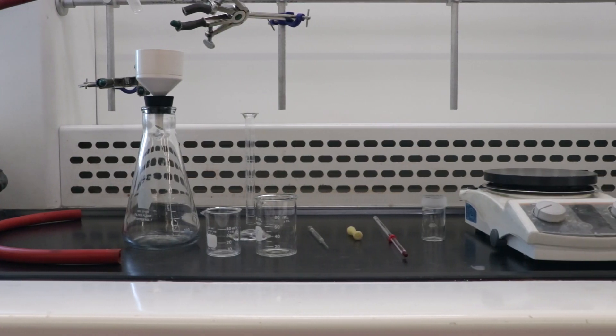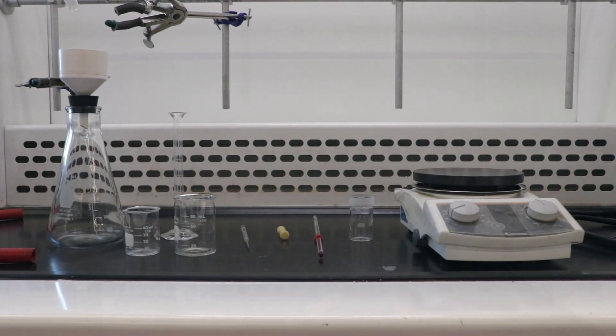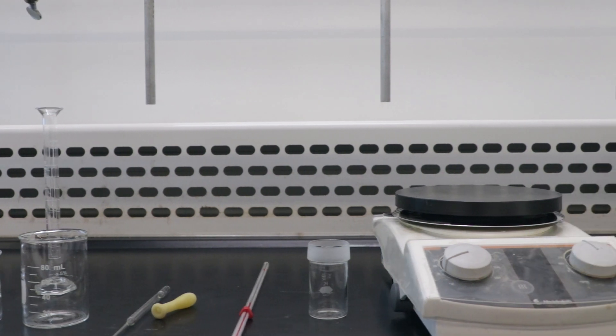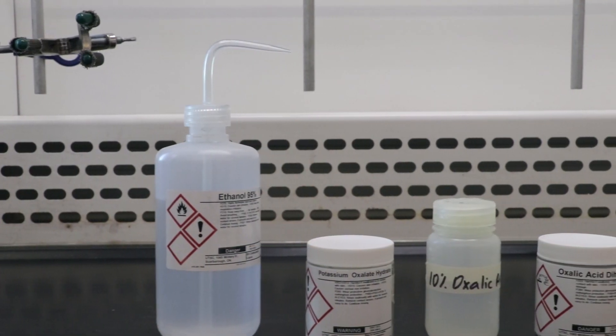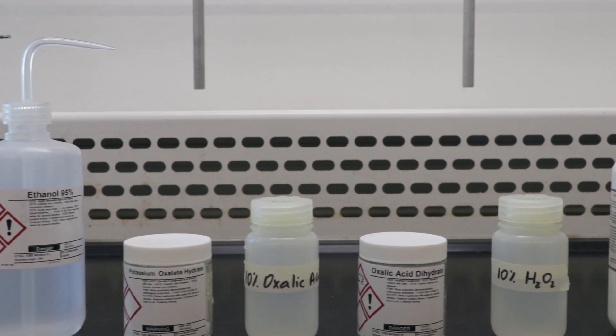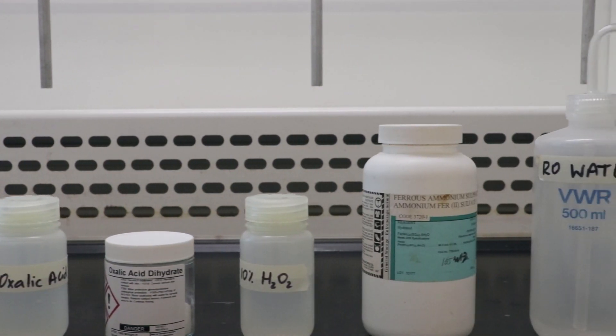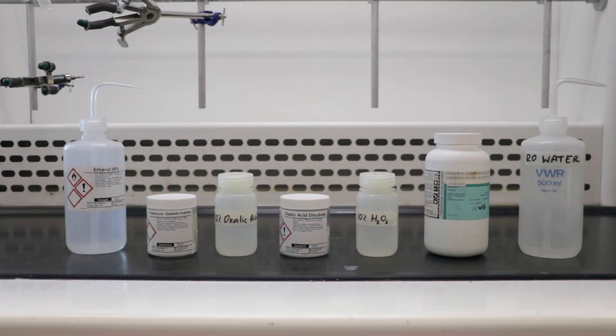This is the apparatus you'll need for this lab. The thermometer can be found at the front of the lab. Everything else can be found in your drawer. All of the solid chemicals you need to weigh out can be found near the top loading balances. Oxalic acid, hydrogen peroxide, and ethanol can be found in the TA fume hood.